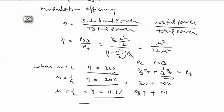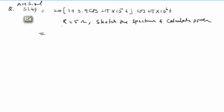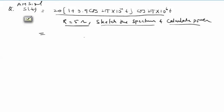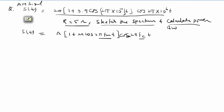We now work through a numerical example. An AM waveform is given with antenna resistance of 5 ohms. We are asked to sketch the spectrum, calculate power, and find bandwidth. We compare the given waveform with the standard AM expression. The message signal frequency fetched from comparison is 10 kHz and carrier frequency is 1 MHz.